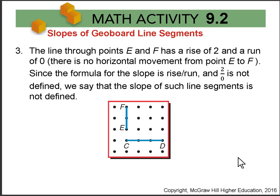Then when we look at E and F, it has a rise of 2, but no run, since there's no horizontal movement. Since the formula for slope is rise over run and 2 over 0 is not defined, we say the slope of such line segments, vertical lines, is not defined. It's often said also to have undefined slope.